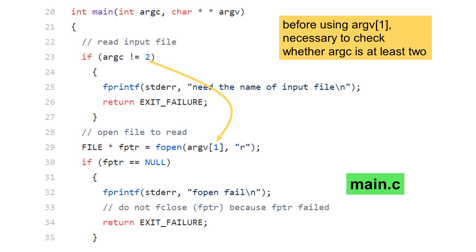This program uses the variable fptr to store the file pointer. If fopen fails, fptr will be null. Before we read the content of the file, it is necessary to check whether fopen is successful or not. If fopen fails, print an error message and return EXIT_FAILURE.